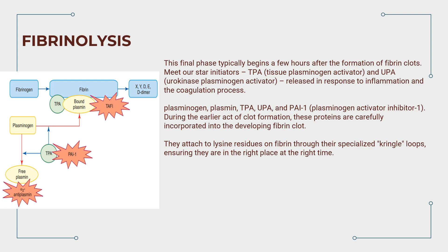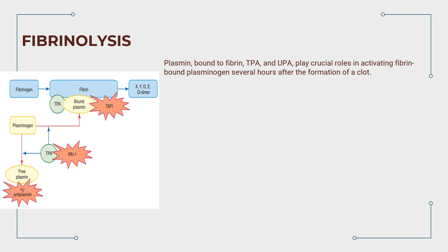Fibrinolysis is a controlled, systematic process. Plasmin, bound to fibrin, takes center stage. TPA and UPA play crucial roles in activating fibrin-bound plasminogen several hours after the formation of a clot.